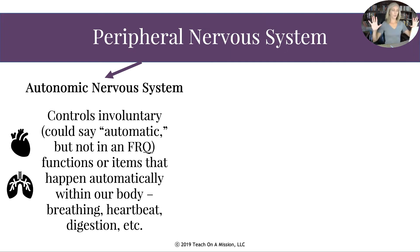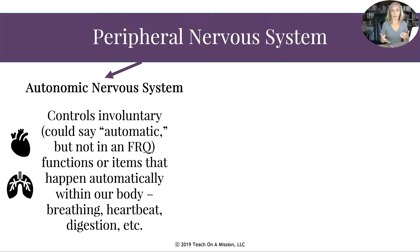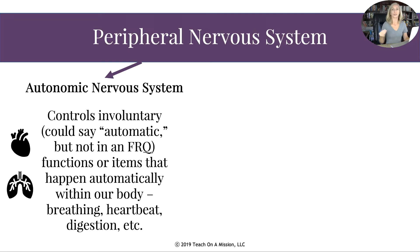Now let's talk about the peripheral nervous system. We have two subdivisions, starting with the autonomic nervous system. Think of 'automatic' — but use the psychological term 'involuntary' in your FRQ. The autonomic nervous system controls involuntary functions that happen automatically within our bodies — things you can't stop without dying. You can't stop breathing or your heartbeat; you don't want to stop digestion either.